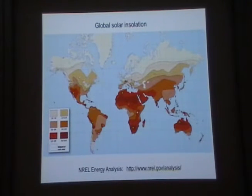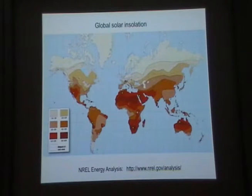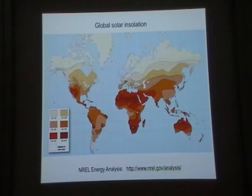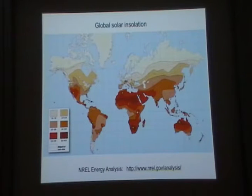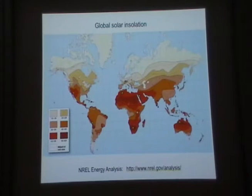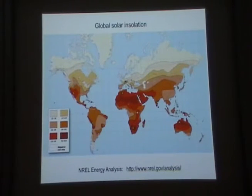Why solar? We have a tremendous solar resource globally. On this resource map, the dark red indicates higher insolation. These little green squares equate to the land area required for all the electricity used in the United States — about 100 kilometers on a side, 10,000 square kilometers. If we covered that with solar cells at 15% efficiency, that would supply all electricity needs for the US. What amazes me is just how much solar insolation is in the Sahara Desert. For more, I direct you to the NREL homepage.